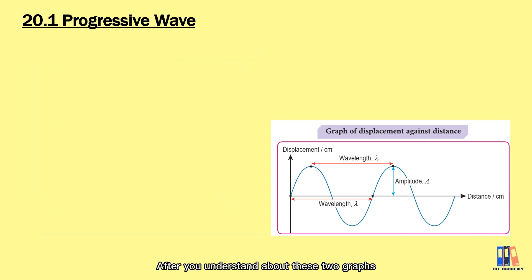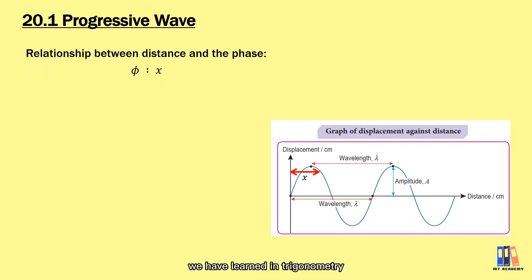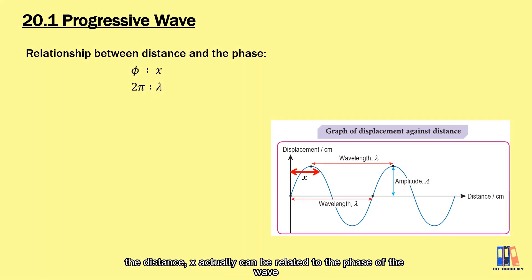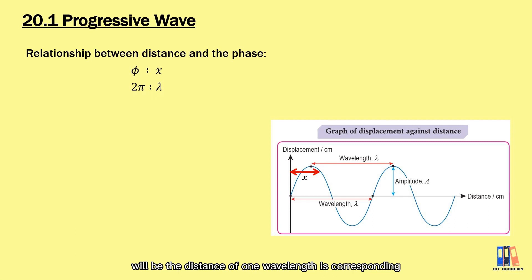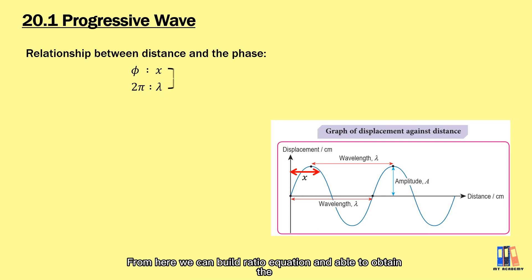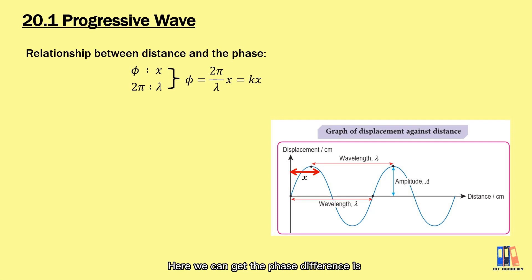After understanding these two graphs, we look at the equation of the progressive wave, which includes both time and distance. Let's link distance and phase. Looking back at the sin graph from trigonometry, distance x is linearly proportional to the phase of the wave. One wavelength corresponds to one complete oscillation — a phase of 360 degrees or 2π radians. Using a ratio, we get phase difference = 2πx/λ, which simplifies to kx.